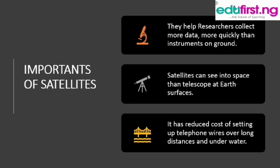When you launch a satellite it can see what is happening in space — it can study weather, humidity, radiation coming to the Earth, and many other things, more than a telescope on the ground trying to view things happening in space. Thirdly, it reduces the cost of setting up telephone wires over long distances and underwater — that's about telecommunication.